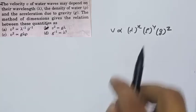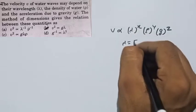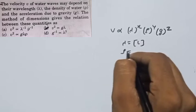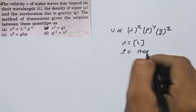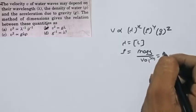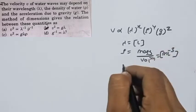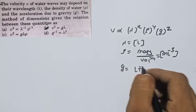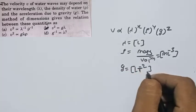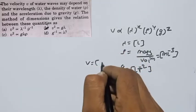Lambda ka dimension L hota hai kyunki woh length hai. Density ka dimension mass upon volume hota hai, so ML⁻³ hota hai. Aur g jo acceleration due to gravity hai, uska dimension LT⁻² hota hai. Velocity ka dimension LT⁻¹ hota hai — yeh sabko pata hai.